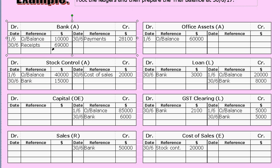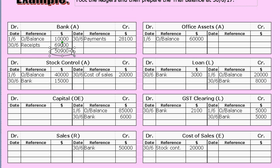You add up the big side and take away the little side. In the bank account, you add up the debits — a total of $79,000 — and take away the other side, $28,100. The difference is $50,900. You write that on the debit side because the debits are bigger than the credits. Write it in pencil and put a little circle around that figure. That becomes the footed balance.